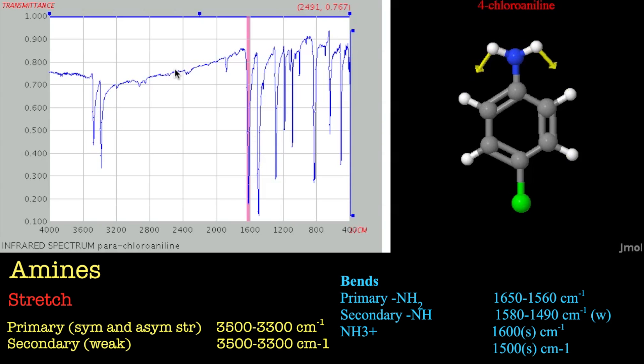So the first thing you should be looking for for a primary amine which is capable of doing this scissor bend is look for a peak here at 1600 something like that. That's really useful.